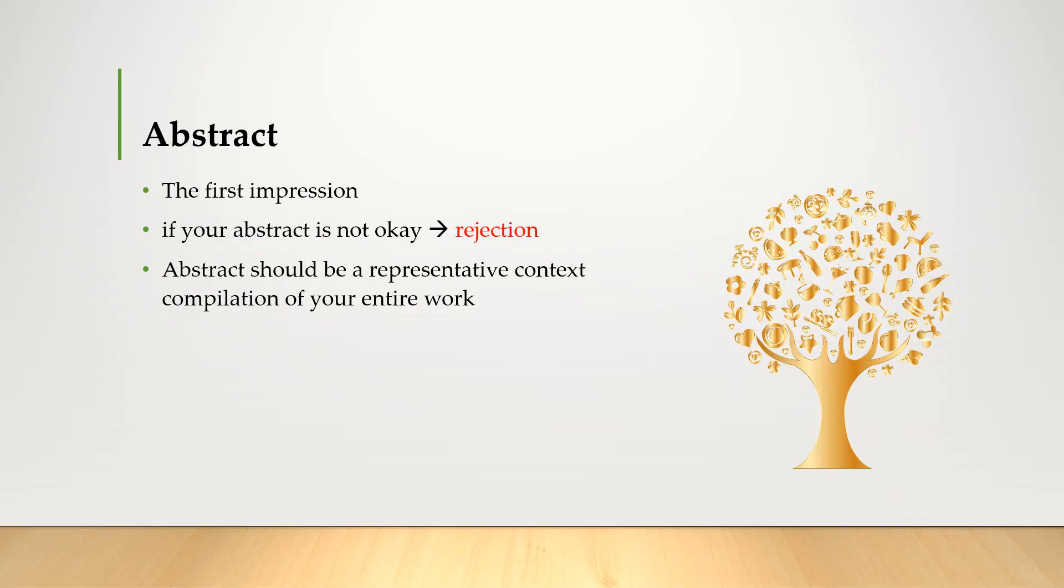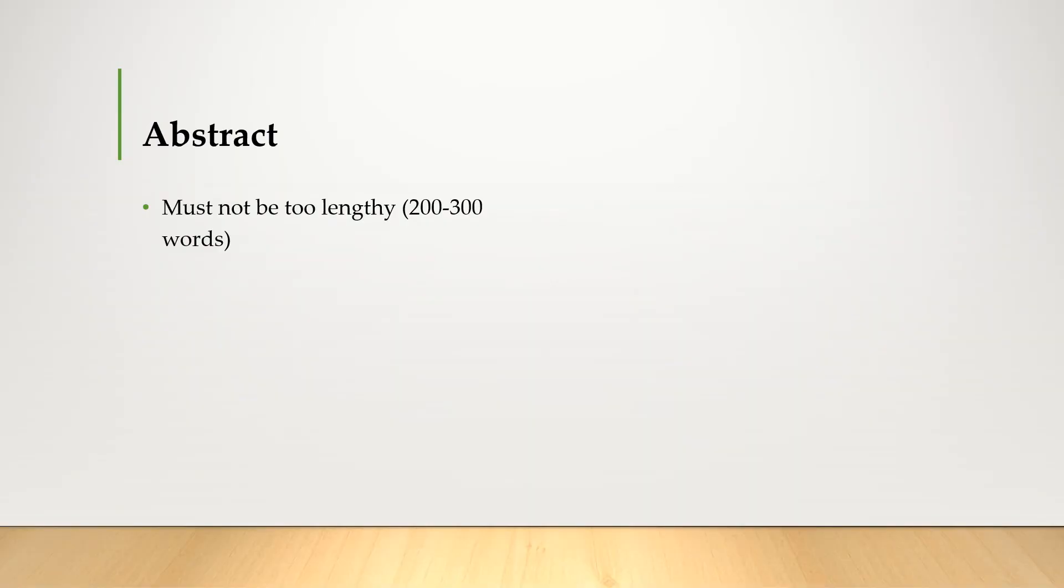So your abstract should be a representative, condensed compilation of your entire work. It may be structured or unstructured depending upon the requirement and the guidelines given by the journal. An abstract must not be too lengthy. In most cases it ranges from 200 words to 300 words. You should comply with the word limit.